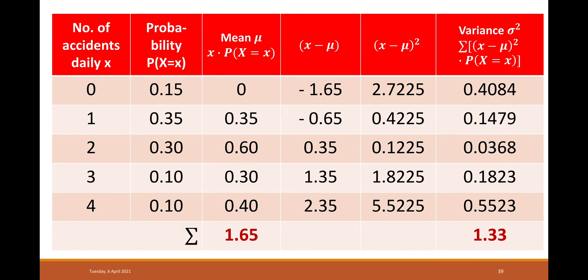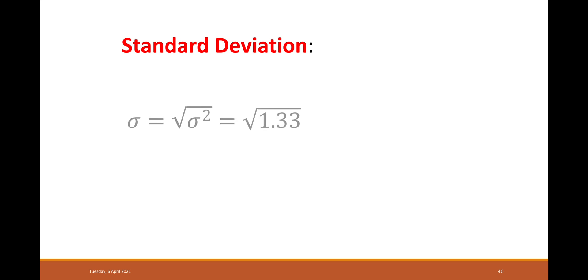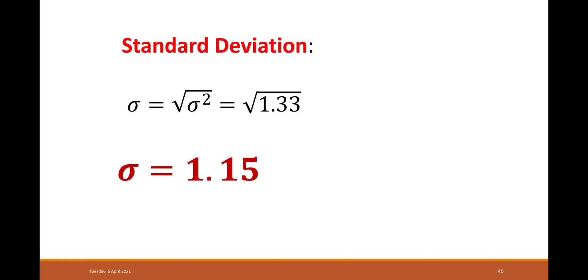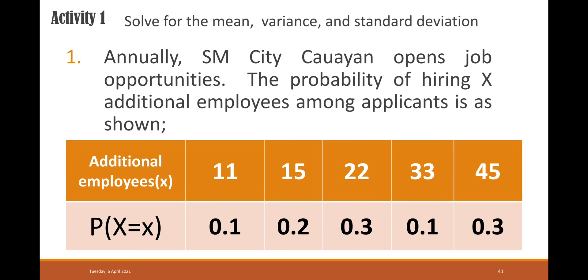To find the standard deviation, get the square root of the variance. The square root of 1.33 is approximately 1.15. Therefore, the standard deviation is 1.15.